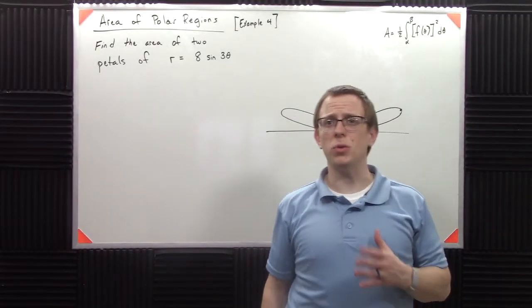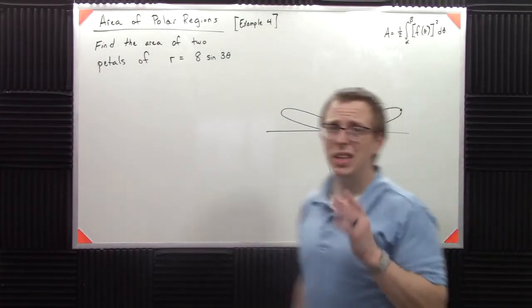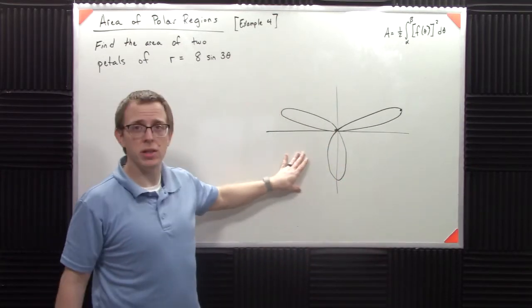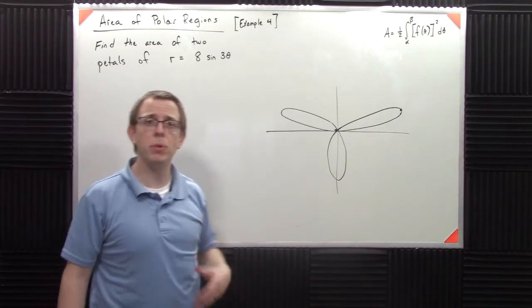This example is a little different because we're going to have kind of a nasty little graph here. This looks like, well my drawing of this is like a sad little windmill, but it's supposed to be a pedal.